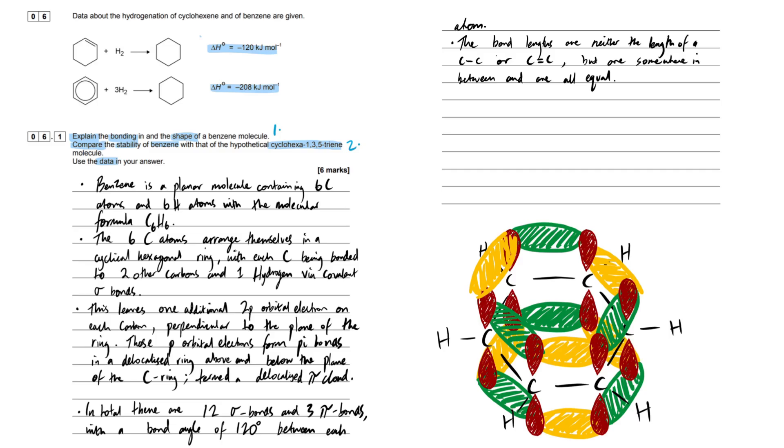One thing AQA loves to see is regarding bond length. The bond lengths are neither the length of a carbon-carbon single bond or a carbon-carbon double bond, but are somewhere in between and are all equal. This is really important. The bonds we measure are somewhere in between the two, telling us it's neither single nor double carbon bonds but the delocalized ring structure.